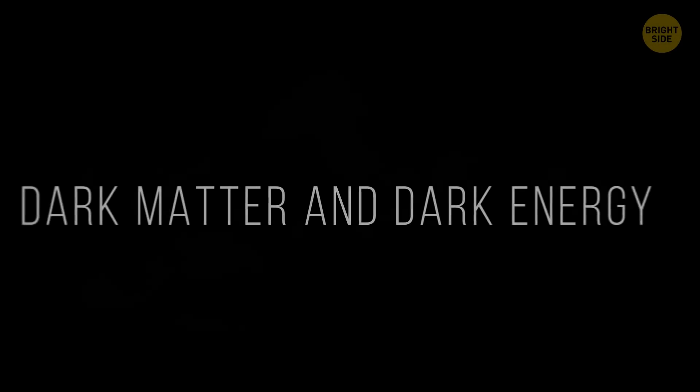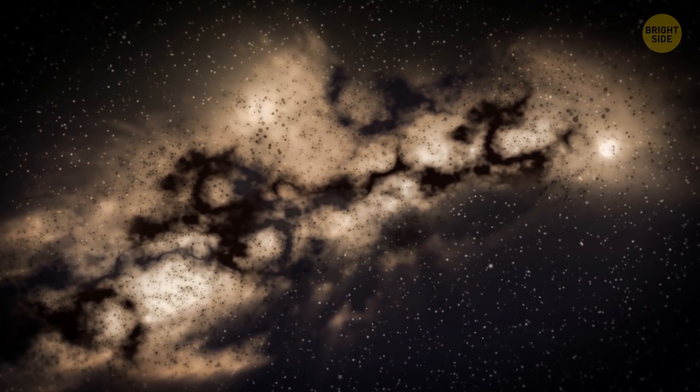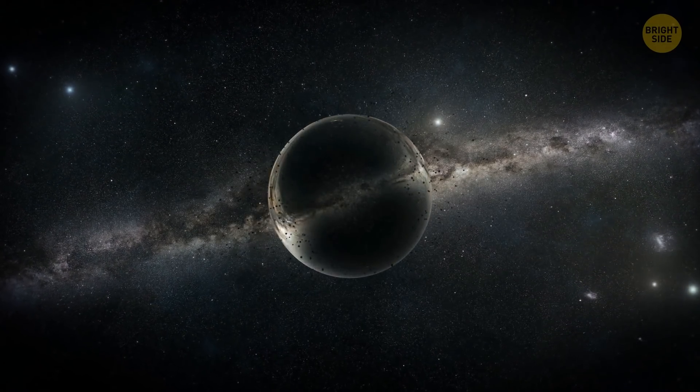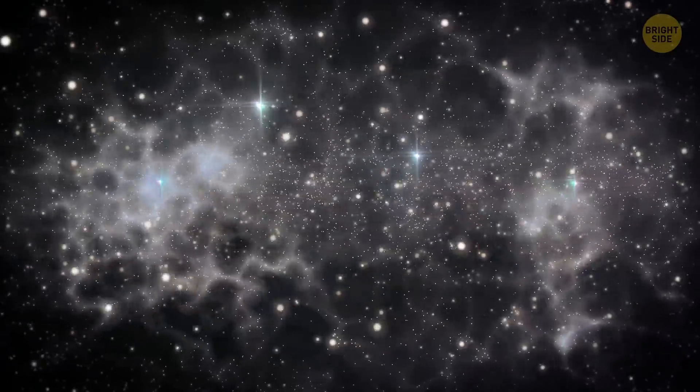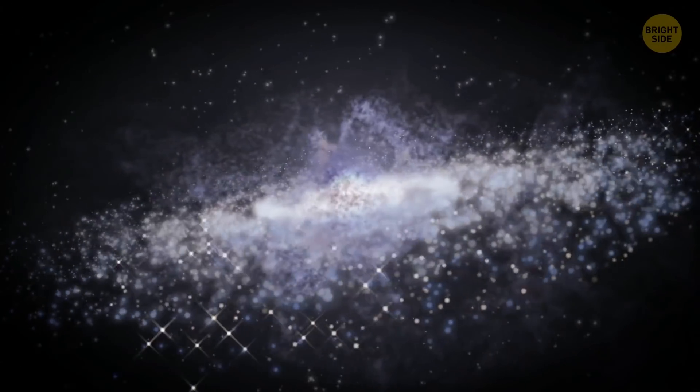Dark matter has often been dubbed the glue that holds our universe together. It doesn't absorb, reflect, or emit light, so it's completely invisible. But scientists know that it exists because they see the effects it has on other visible objects.